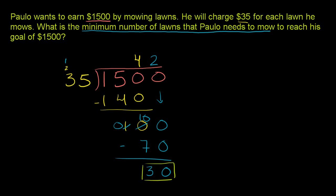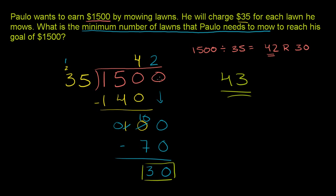To remind ourselves: 1,500 divided by 35 equals 42, remainder 30. So 42 won't be enough lawns — we still have $30 more to earn. He's going to have to mow one more lawn to get another $35, so he'll have $5 left over after making up that $30. He is going to have to mow 43 lawns to cross the threshold of $1,500. If he does mow 43 lawns, he'll have more than $1,500 — actually $5 more than $1,500.